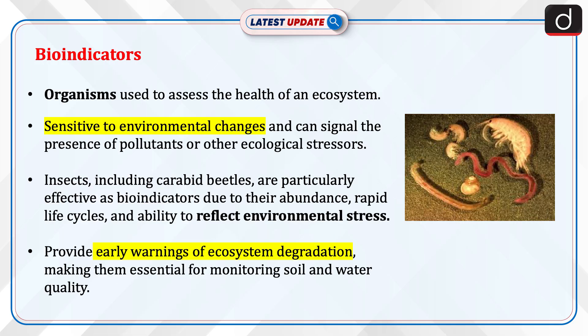Now let's discuss bioindicators. Bioindicators are organisms used to assess the health of an ecosystem. They are sensitive to environmental changes and can signal the presence of pollutants or other ecological stressors. Insects, including carabit beetles, are particularly effective as bioindicators due to their abundance, rapid life cycles, and ability to reflect environmental stress. They provide early warnings of ecosystem degradation, making them essential for monitoring soil and water quality.